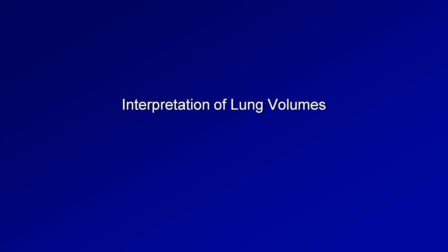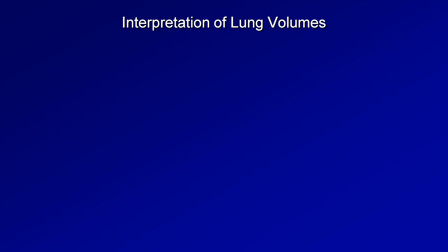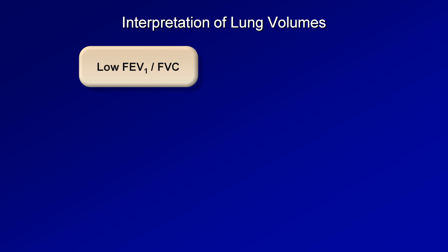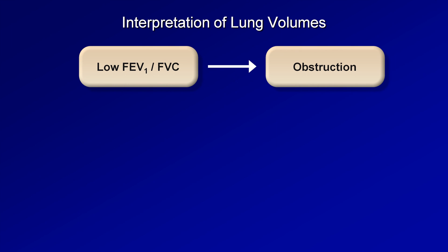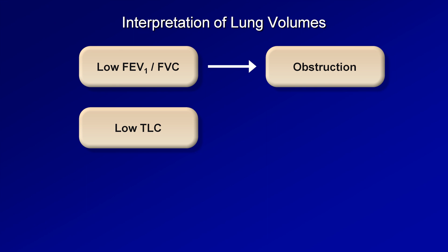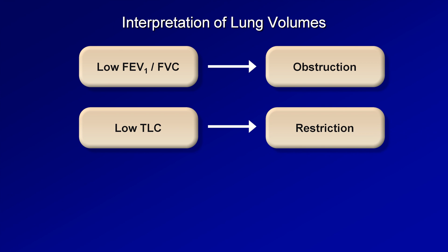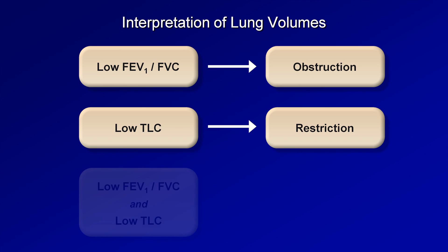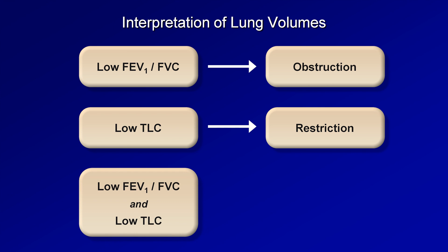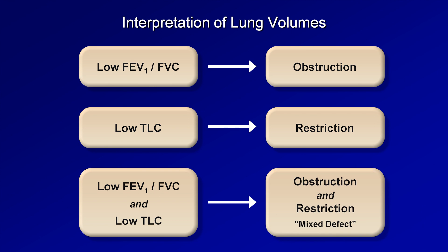So what do we now do with this information about the lung volumes, specifically the total lung capacity? Here's a very brief summary of how spirometry and lung volumes can be used together to make a diagnosis in a patient with lung disease. A patient with a low FEV1 to FVC ratio has obstructive lung disease. A patient with a low total lung capacity, or TLC, has restrictive lung disease. And a patient unfortunate enough to have both a low FEV1 to FVC ratio and a low TLC has both obstructive and restrictive lung disease, often referred to as a mixed defect.